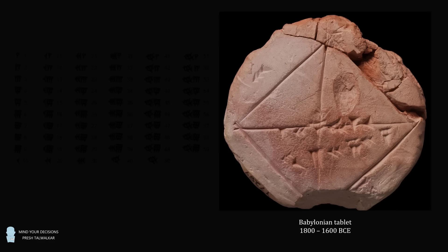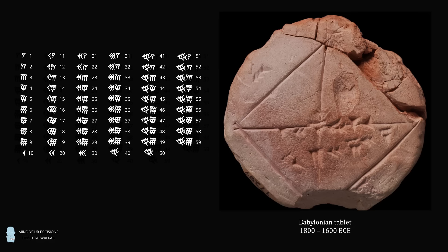This Babylonian clay tablet represents one of the most important mathematical texts of the ancient Mesopotamian civilization. The Babylonians used a base 60 number system, which has an enduring legacy in the 60 minutes we have in an hour. They represented numbers by cuneiform numerals, and if you study the tablet closely, you may be able to make out some of the numerals carved in and convert them into the numbers we use in everyday life.